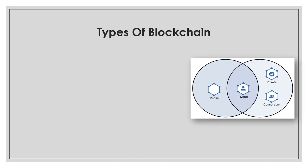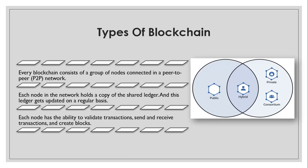All four types of blockchain have certain similarities. Every blockchain consists of a group of nodes connected in a peer-to-peer network. Each node holds a copy of the shared ledger, where all transactions are recorded and updated regularly. Each node also has the ability to validate transactions, send and receive transactions, and create blocks to add to the blockchain.